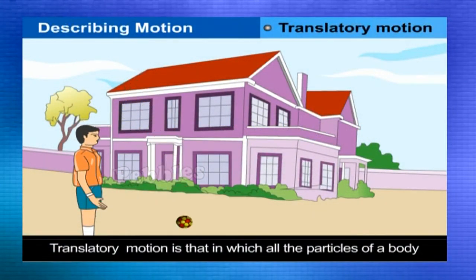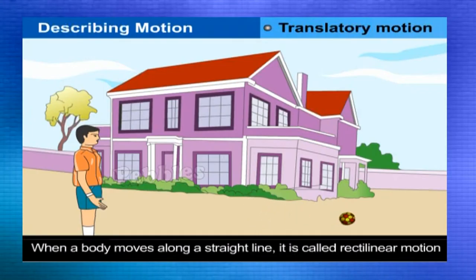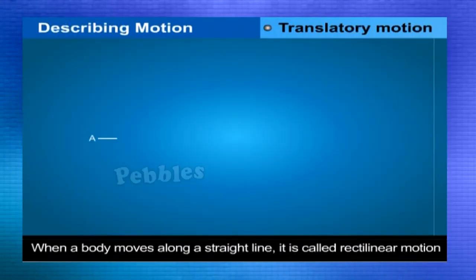Translatory motion is that in which all the particles of a body move through the same distance in the same time. When a body moves along a straight line, it is called rectilinear motion. When a body moves along a curved line, it is called curvilinear motion.